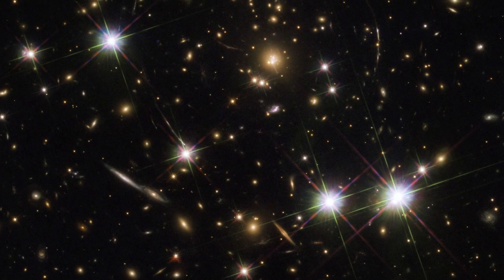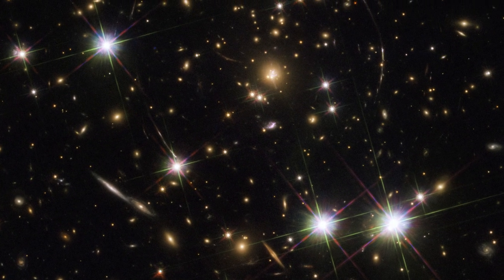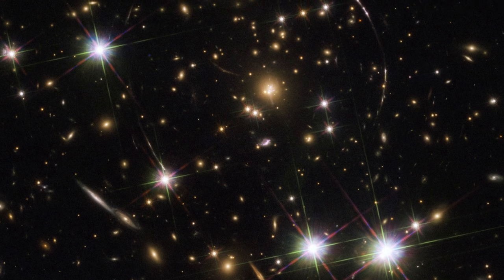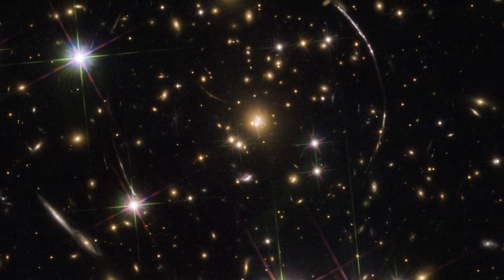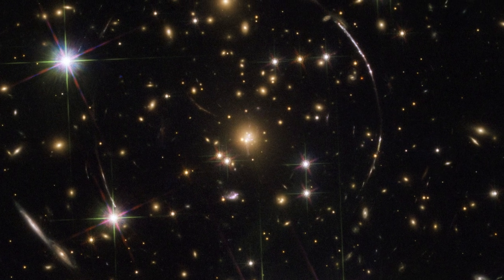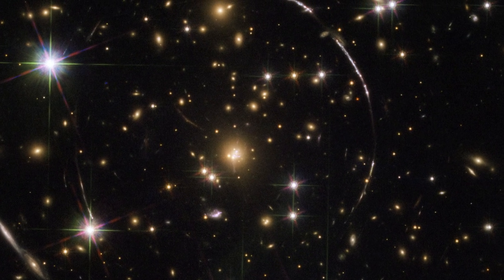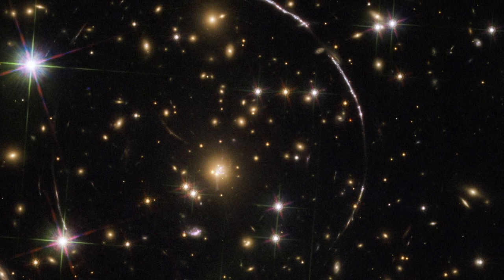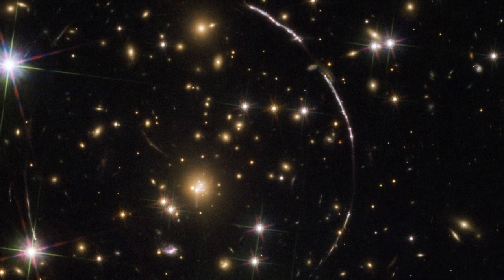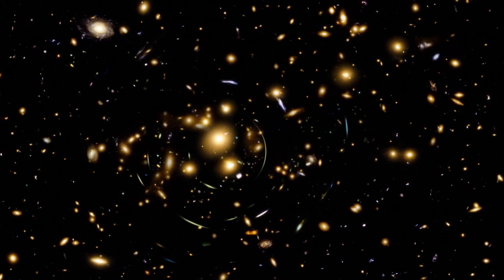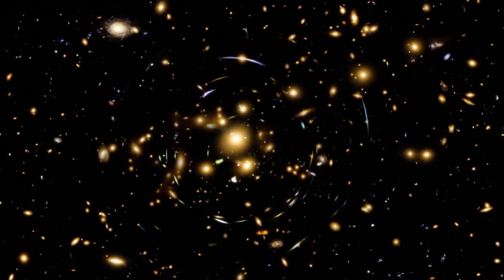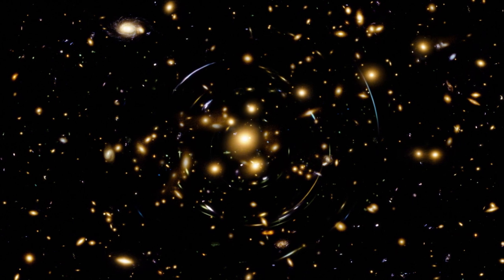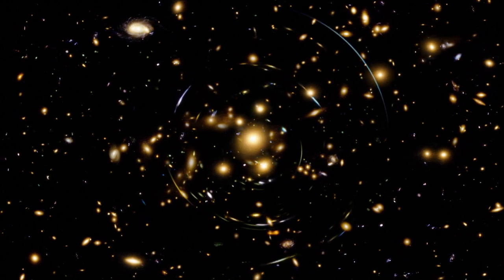The Hubble Frontier Fields Observing Campaign drew upon the power of massive clusters of galaxies to unleash the full potential of the Hubble Space Telescope. Hubble's sensitivity and high resolution allow it to see faint and distant gravitational lenses that are harder to detect with ground-based telescopes.